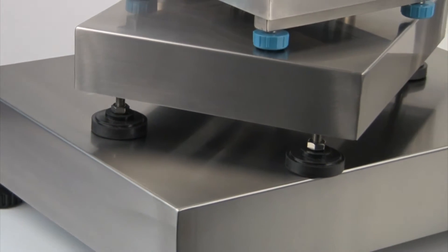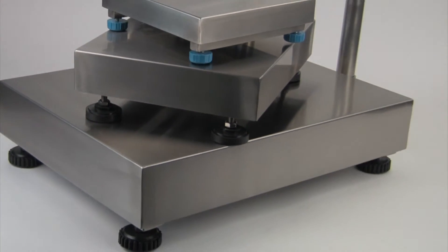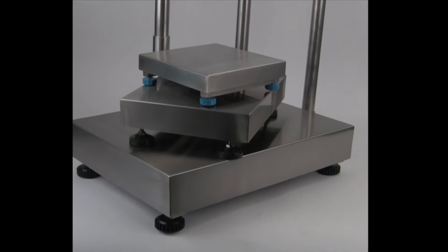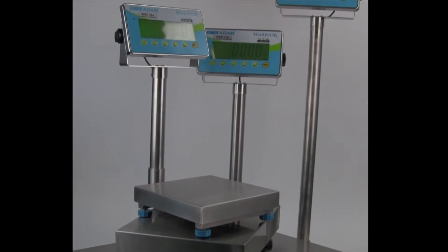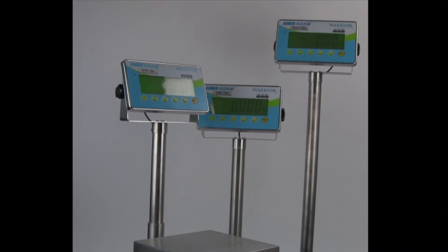The Warrior range of scales contains 8 models with capacities from 8 kg to 150 kg and pan sizes up to 45 by 60 cm or 18 by 24 inches.